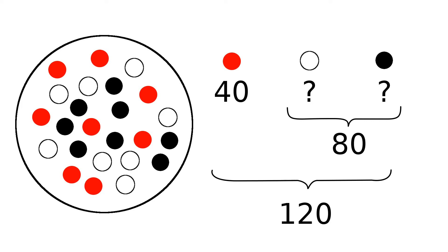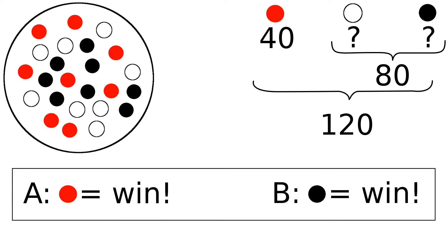I'm going to spin the barrel and draw a ball, and you can win depending on which colour ball is drawn. I'll give you two chances to win. The first chance is a choice between these two options: A, win if a red ball is drawn, or B, win if a black ball is drawn. Which would you prefer?